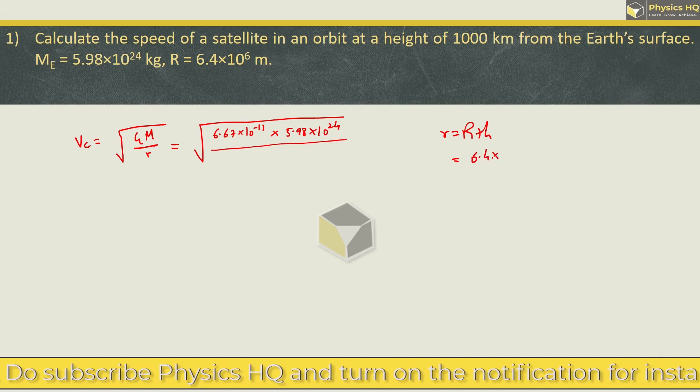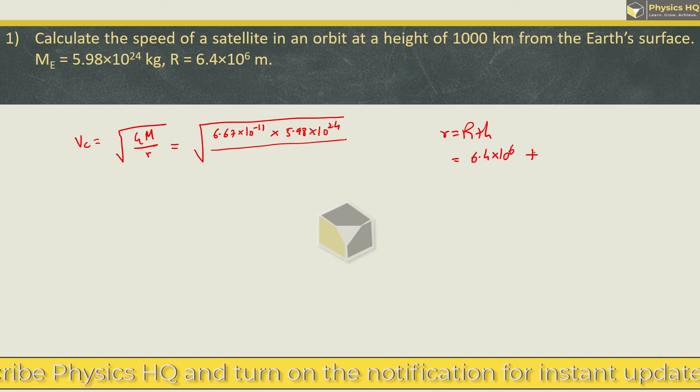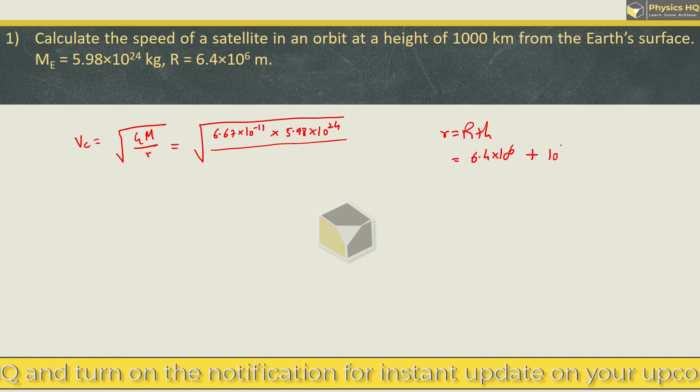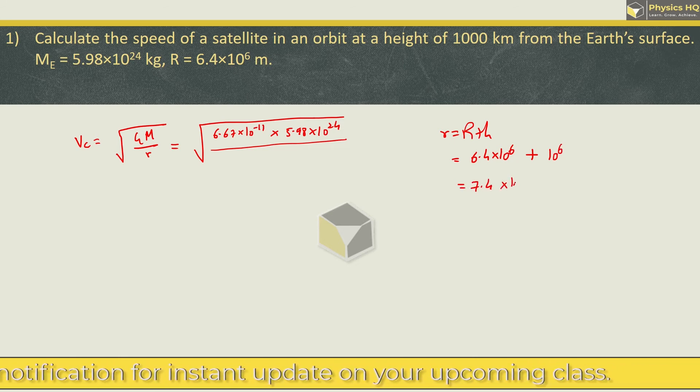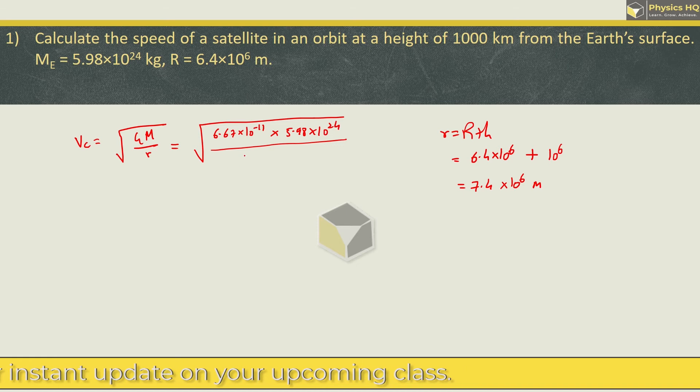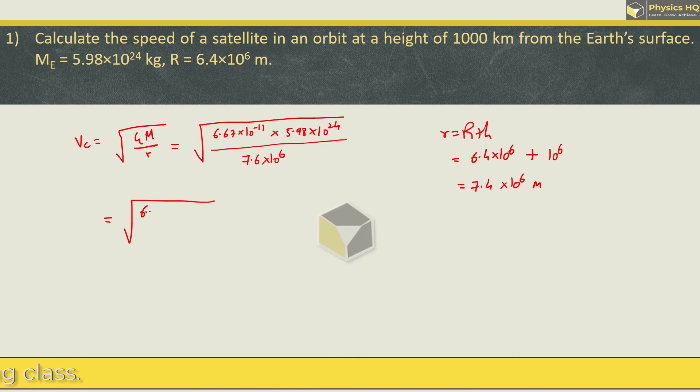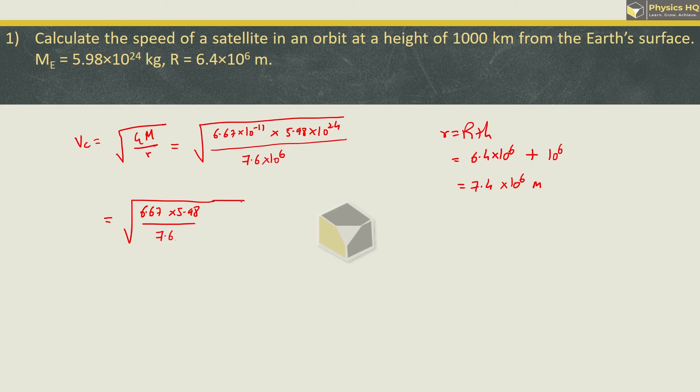Capital R here is 6.4 × 10⁶ meters. Height is 1000 km, which is 10⁶ meters. Adding both gives 7.4 × 10⁶ meters. Let us put it over here. Now we have to use logarithms. We got 6.67 × 5.98 divided by 7.6 × 10⁻¹¹⁺²⁴⁻⁶.